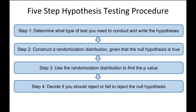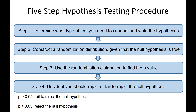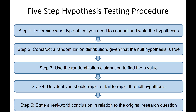Step 4 is to decide if you should reject or fail to reject the null hypothesis. To do this, we compare our p-value to the alpha level we're using for the test. This week we'll learn more about choosing an alpha level, but unless otherwise specified, assume the alpha level is 0.05. If the p-value is greater than 0.05, fail to reject the null hypothesis. If the p-value is less than or equal to 0.05, reject the null hypothesis.